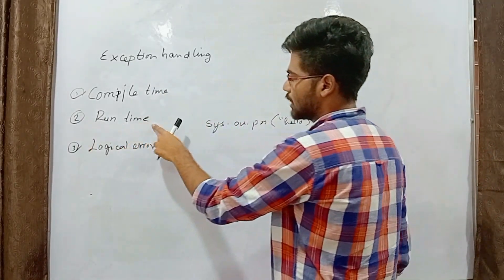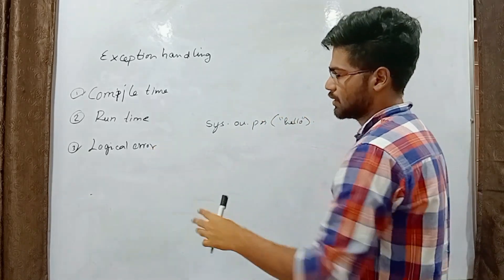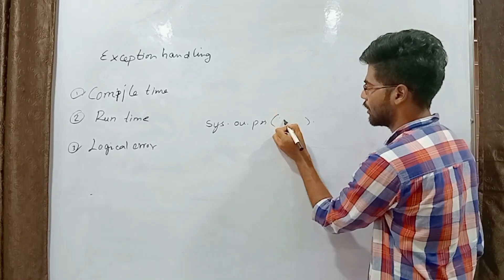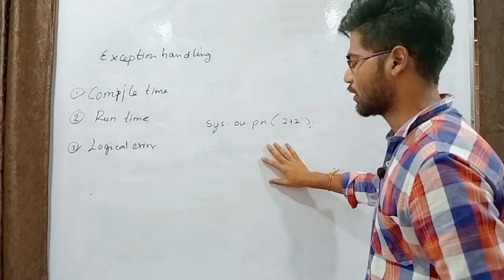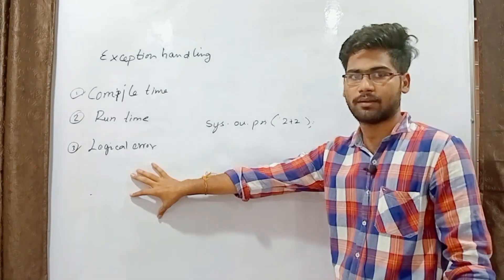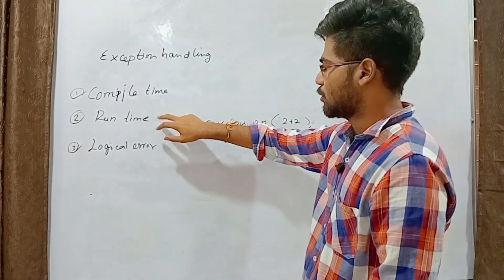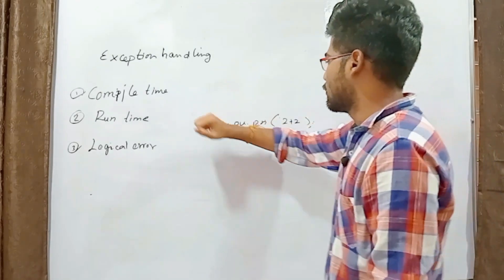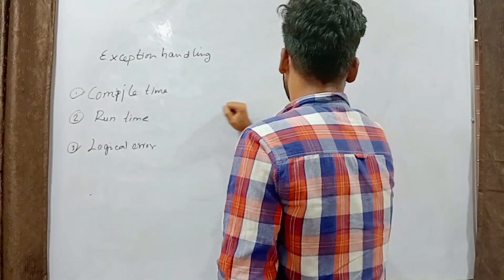Runtime errors: to discuss runtime errors, first you should know about logical errors. Logical errors are automatic errors — for example, if you write two println statements that produce an unintended output, that is a logical error. For runtime errors, we need to understand exception handling. In exception handling, I will write a code and explain it.